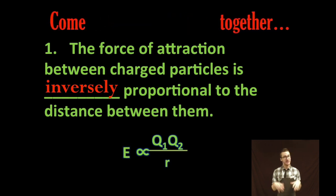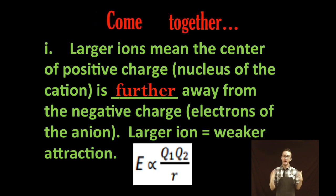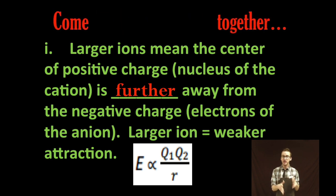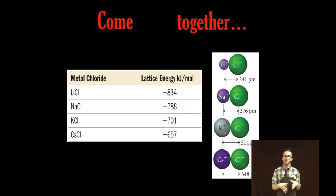In other words as the distance decreases the energy increases. Inversely proportional. So what does that mean? Larger ions mean the center of that positive charge or the nucleus of your cation is further away from the negative charge or the electrons in your anion. So take a look at this great image in your notes with corresponding lattice energies.